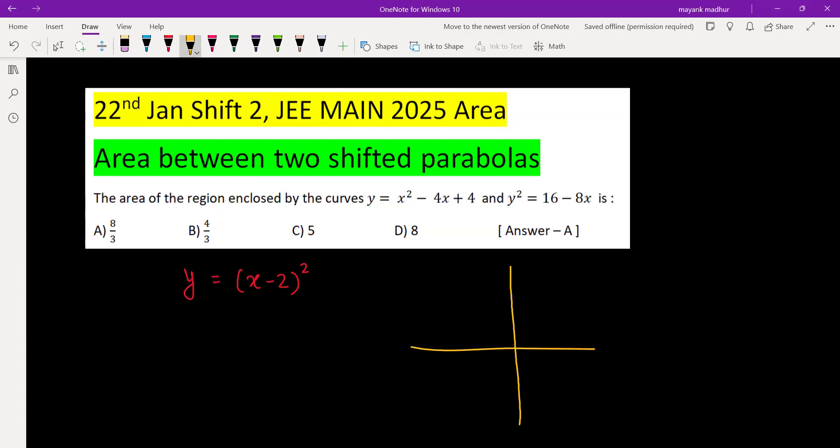The vertex is 2 comma 0, so this parabola will be something like this. Vertex is 2 comma 0 and it is upward in nature. The second one is y square is equal to 16 minus 8x, which is minus 8 times x minus 2.